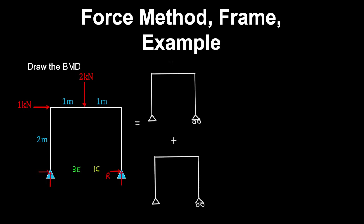On this first case we apply the external loads — two kilonewtons and a lateral load of one kilonewton. This causes a deflected shape where we have a displacement of the roller in this direction, which we call UA.